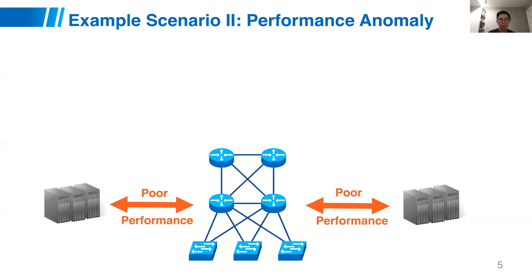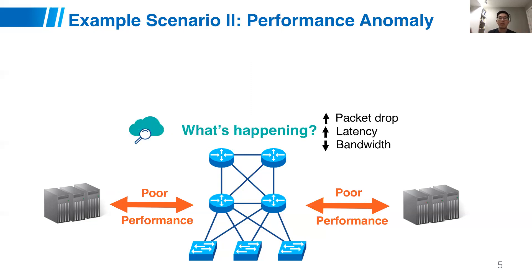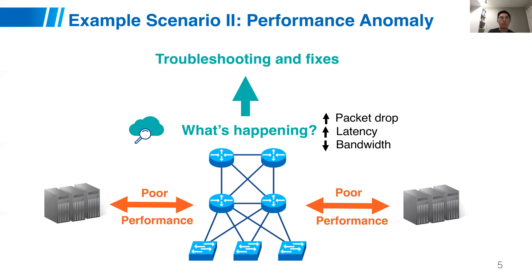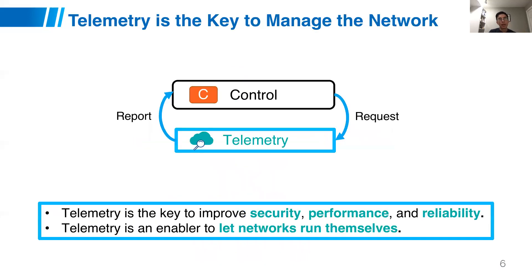Here's a second example. If there is something wrong with the network, we rely on the telemetry system to detect network performance anomalies, because people are complaining that their network is really slow or has performance issues. Then we have the telemetry detect it, and use this information to do troubleshooting and performance fixes. There will be many more such examples, but the key message is that telemetry is the key to managing the network, to improve its security, performance, and reliability.